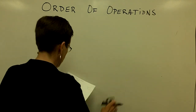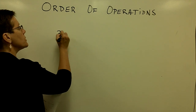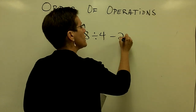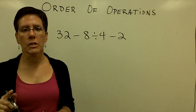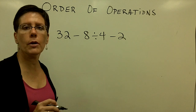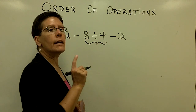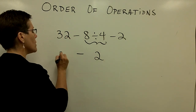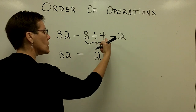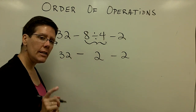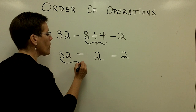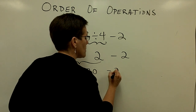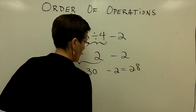The next problem is to take 32 and subtract 8 divided by 4 minus 2. Order of operations says I should multiply and divide before I add and subtract. So I take 8 divided by 4 and get a value of 2. This gives us 32 minus 2 minus 2. Working from left to right, 32 minus 2 is 30, and then I subtract 2 to get a value of 28.